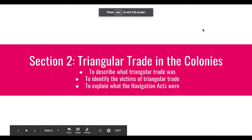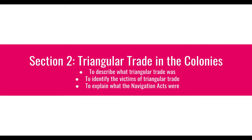We just described triangular trade — that's the exchange of goods between three continents: the Americas, Europe, and Africa. The victims of triangular trade were Africans that became slaves, and Native Americans that were pushed off their lands.